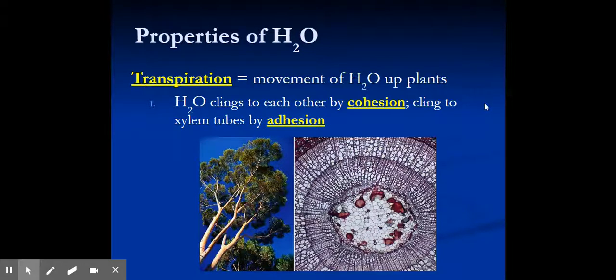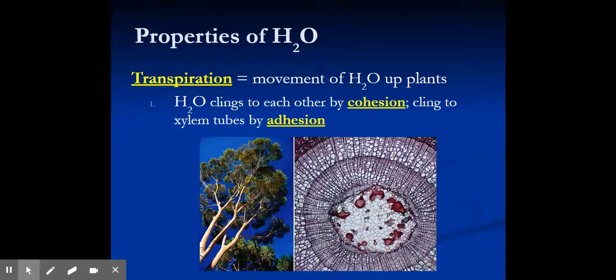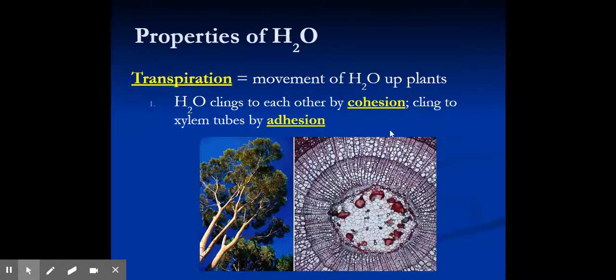Another special property is transpiration. What we see here on the right is a cross section of a tree. Much like us, we have veins and arteries. They have their own system of veins and arteries referred to as xylem and phloem. The water is able to move as a combination between cohesion and adhesion. It'll stick to the walls of their xylems through adhesion and then pull themselves up through cohesion.